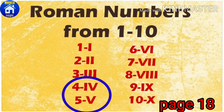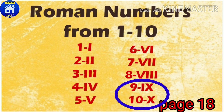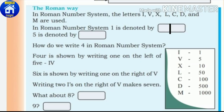I on the left side gives us 4 — so IV is 4. With X, that is 10. Next, 4 is shown by writing I on the left of V. 6 is shown by writing I on the right of V. Writing two I's on the right of V makes 7.